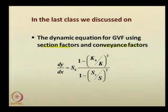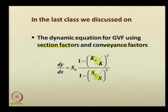The conveyance factor and the section factors — for critical flow as well as for non-critical flow — were all described in the last class. In this way, you can describe the dynamic equation for gradually varied flow.